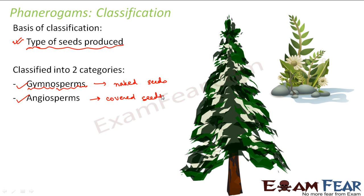Have you ever observed a pomegranate? Inside the pomegranate, you have seeds. If you take a guava, inside the guava you have seeds. So the seeds are not naked — they are present inside a covering, and what is that covering? A fruit. So the seeds are present inside the fruit — they are all covered seeds, and they fall under the category of angiosperms. In gymnosperms, there will be no fruits — these are naked seeds. Examples of gymnosperms will be pine trees. Have you ever seen fruits in pine trees? No — so they will have naked seeds and are known as gymnosperms. All flowering plants fall under the category of angiosperms.